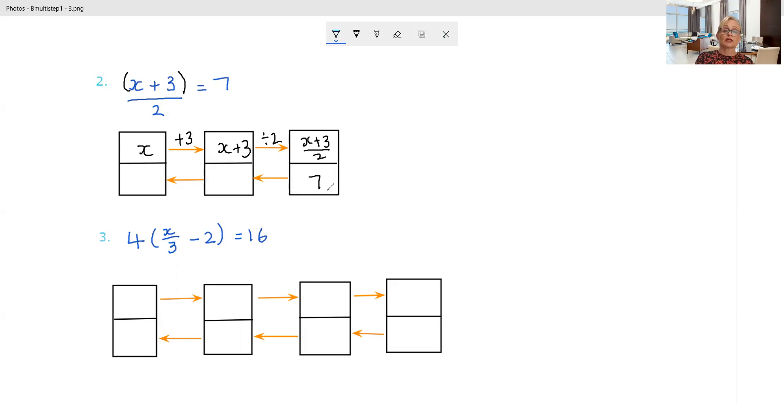So going back in the other direction, we need to undo this divided by 2. How do we undo divided by 2? We multiply by 2. 7 times 2 is 14. Now we're going to undo this addition of 3 by subtracting 3. 14 minus 3 is 11.